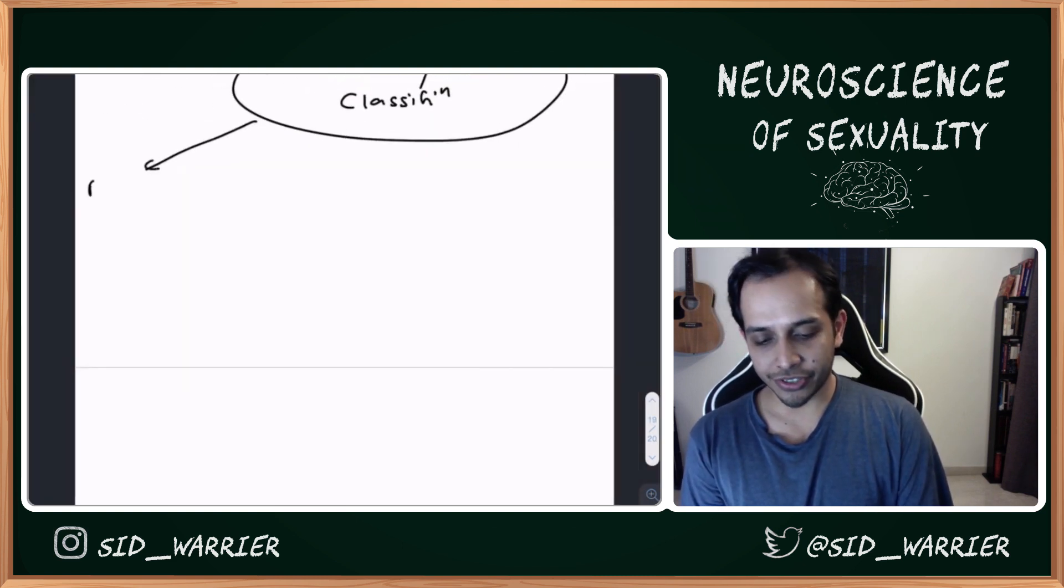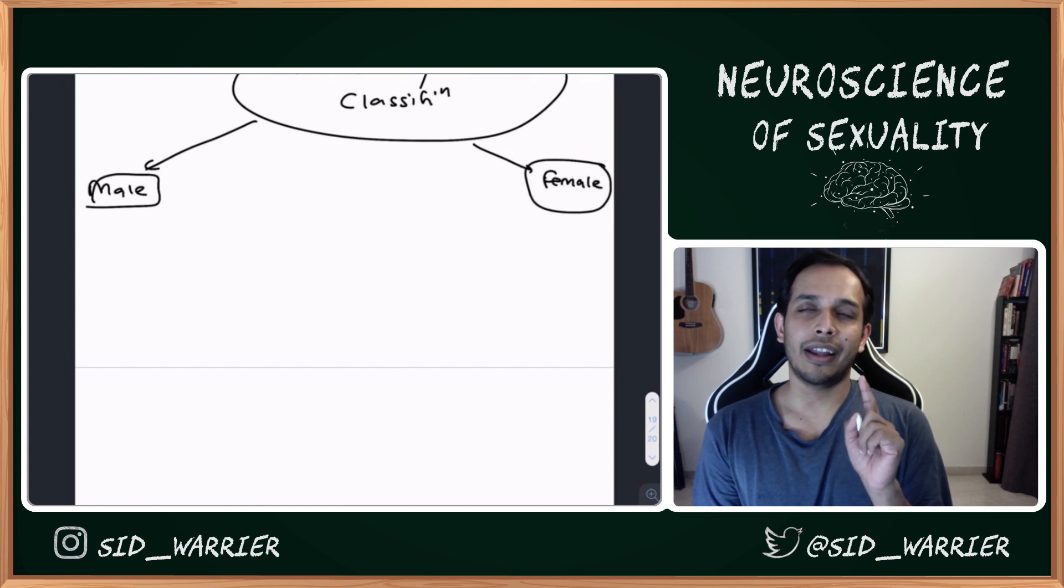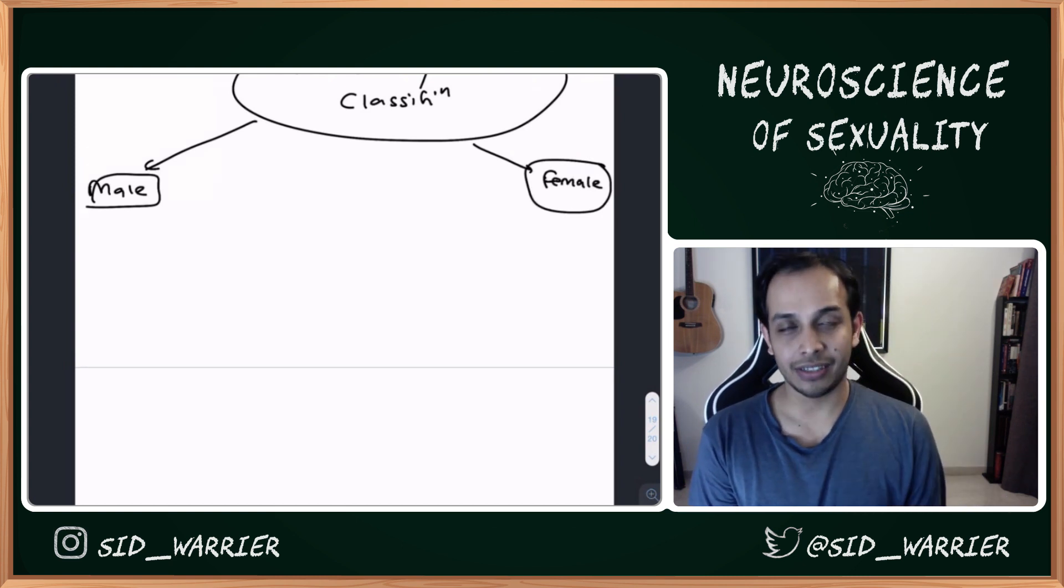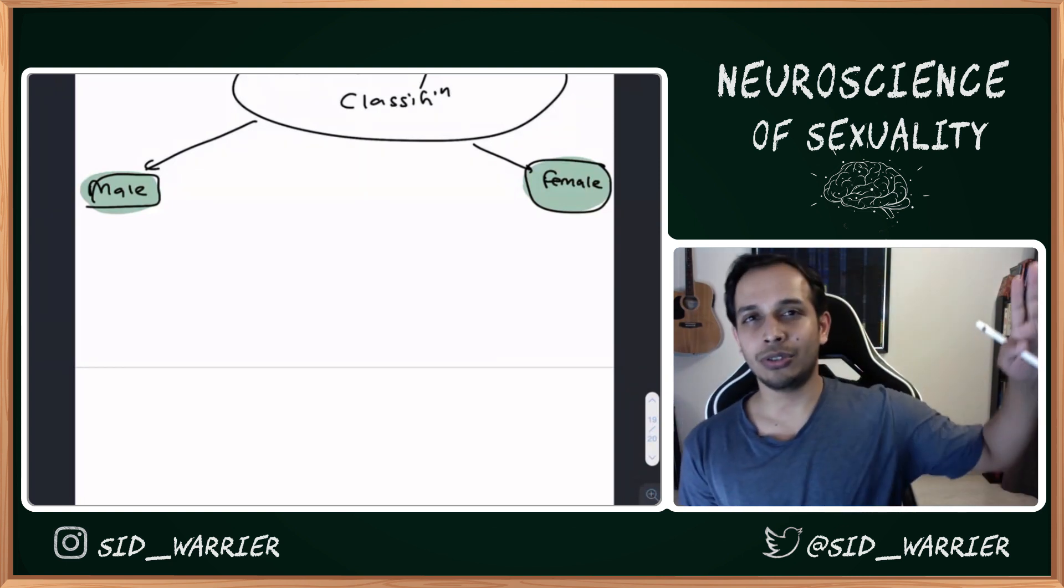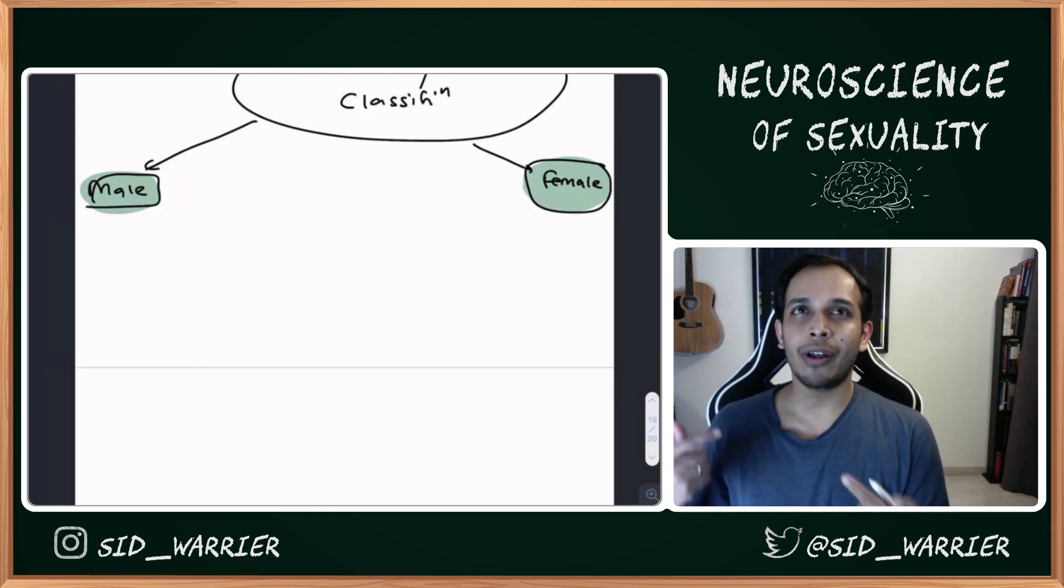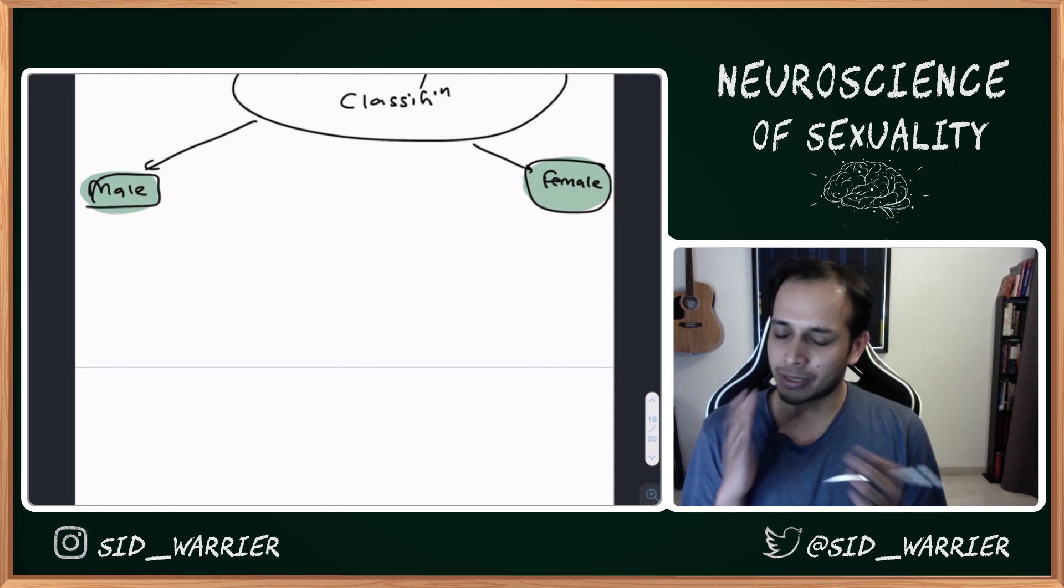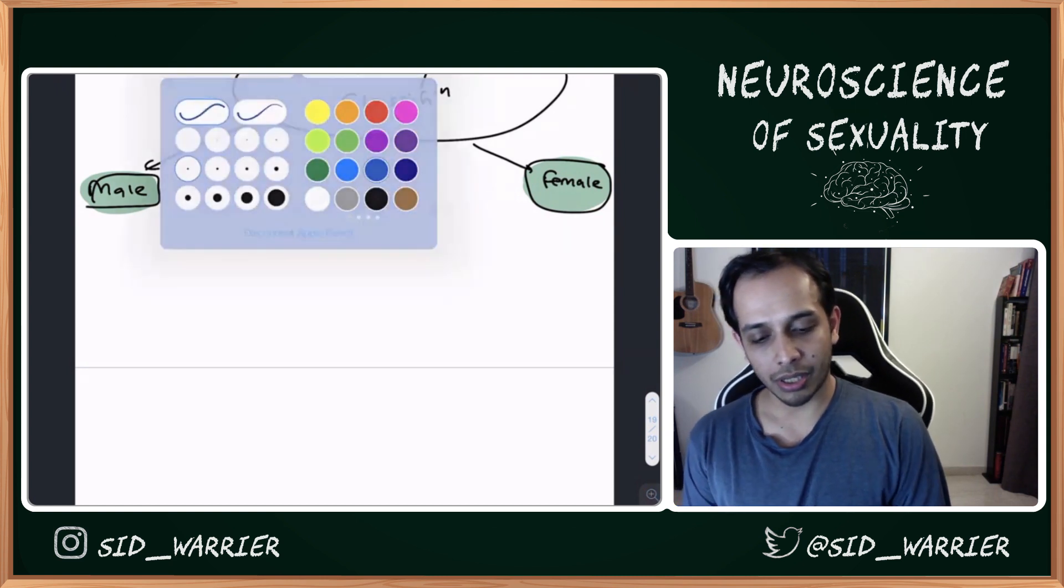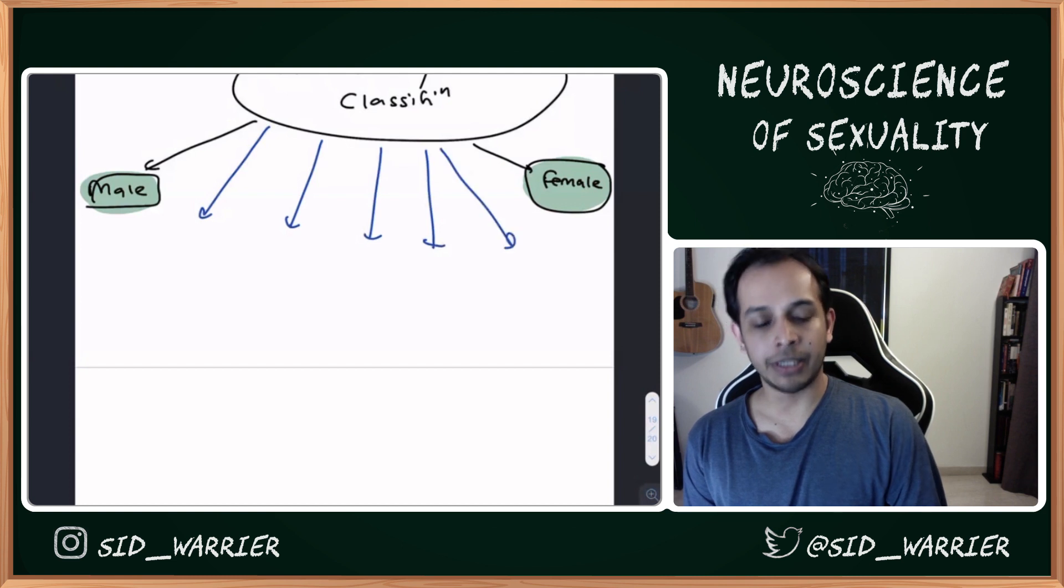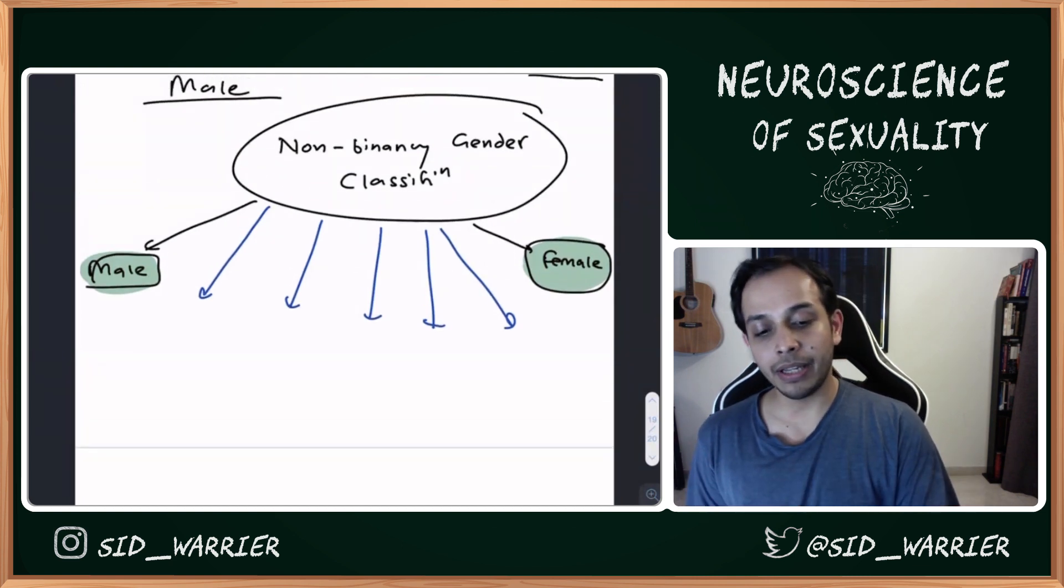So let's look at what a non-binary gender classification looks like. At the extremes we can say male and female, because in the midst of all this let's not forget that this still exists. In the extremes we have male and female. Now you can have multiple things in the middle - this is the spectrum, the gender spectrum. This is identification.